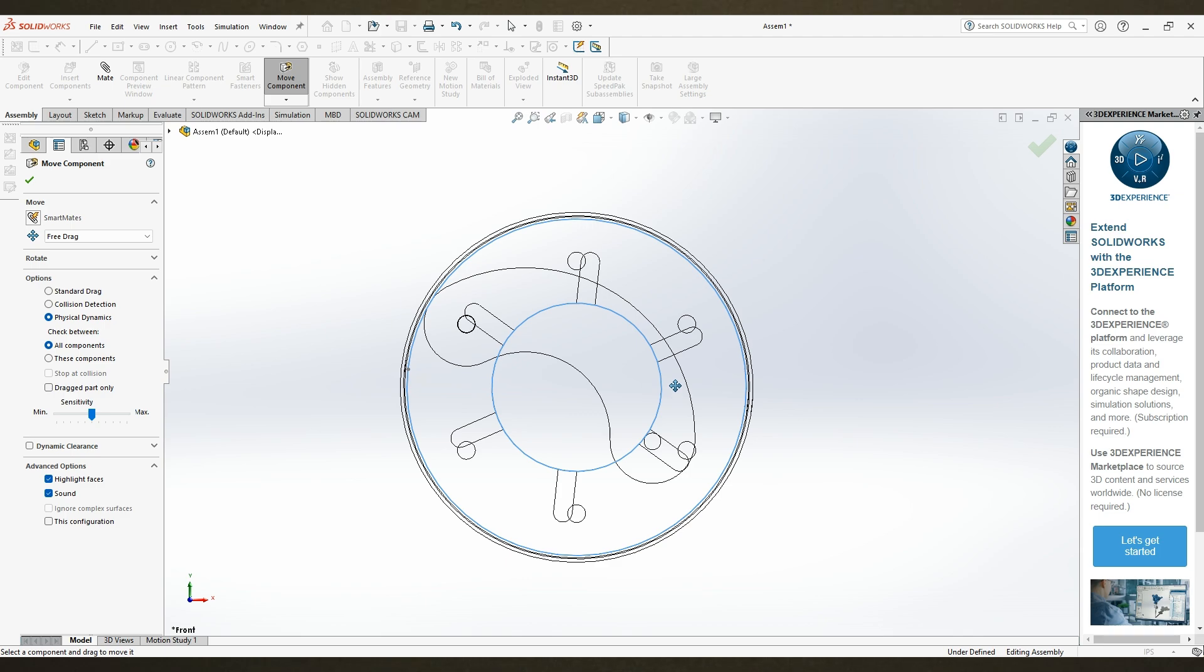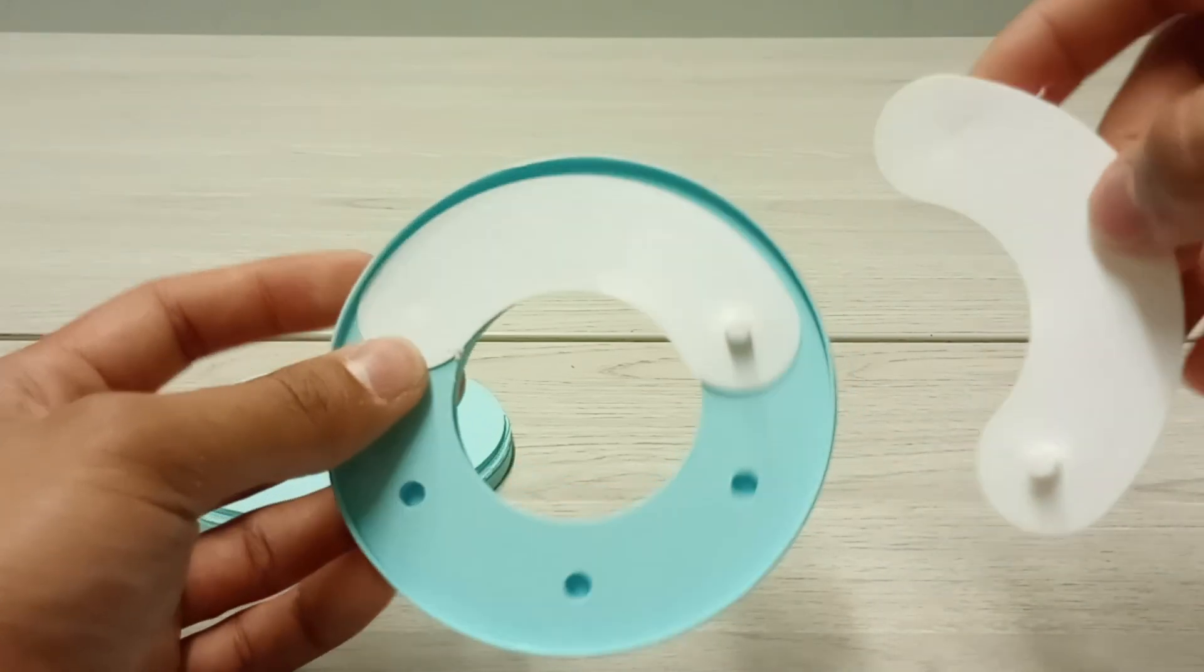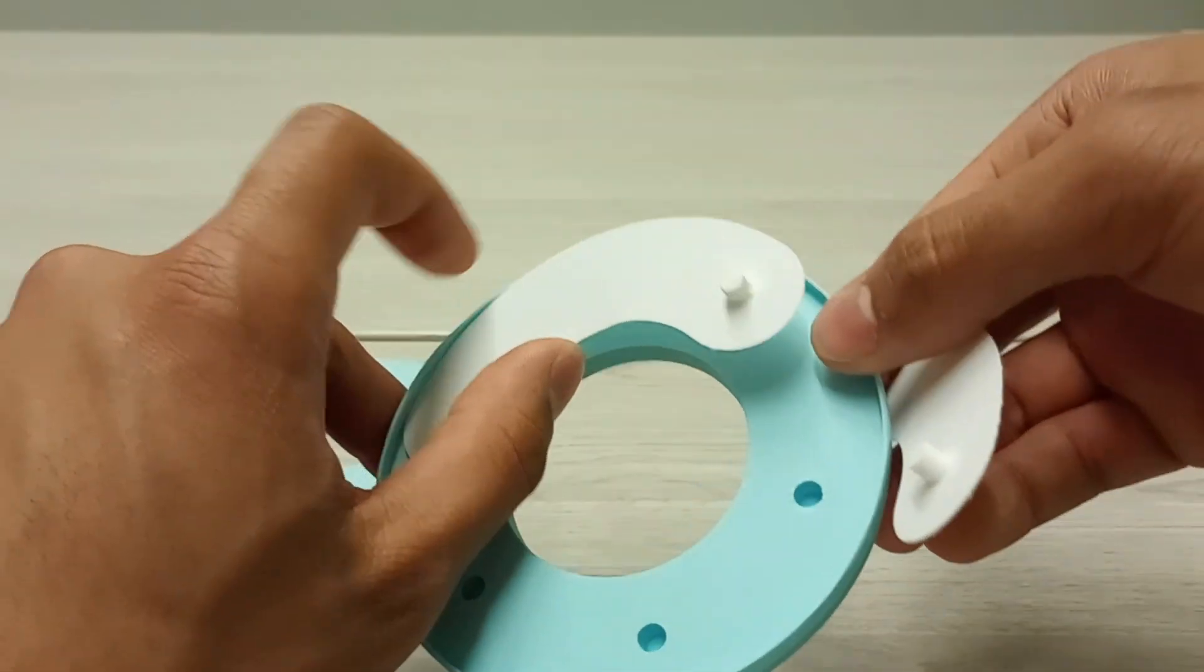And here is an x-ray view to show things more clearly. And by connecting the other blinds in the same manner, this mechanism's model will be complete.